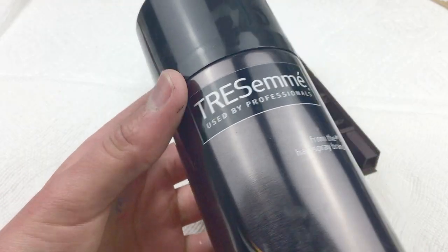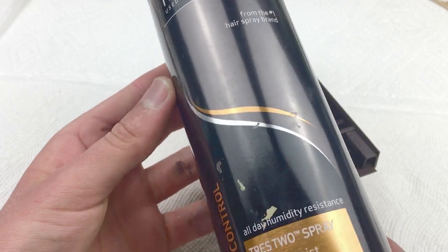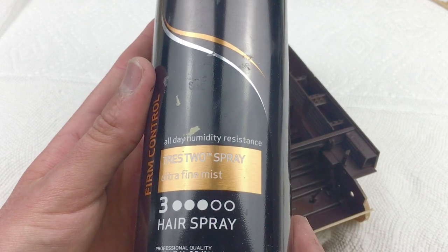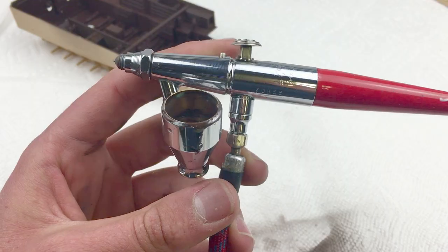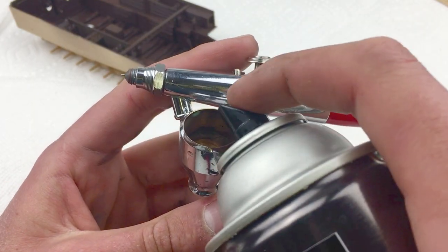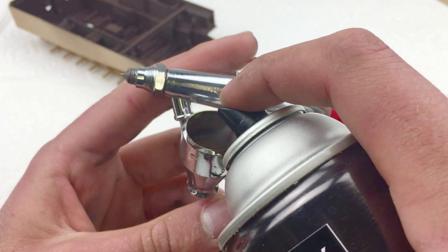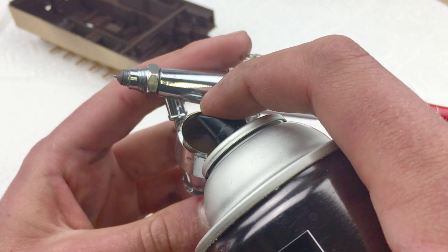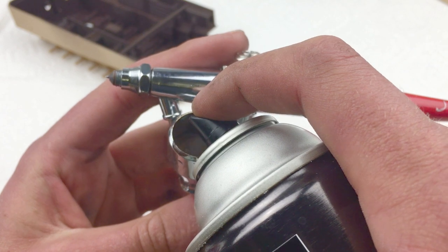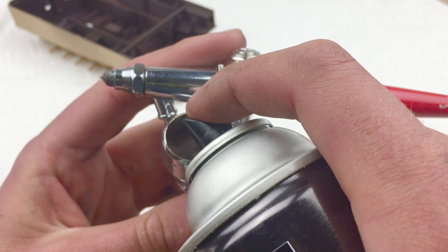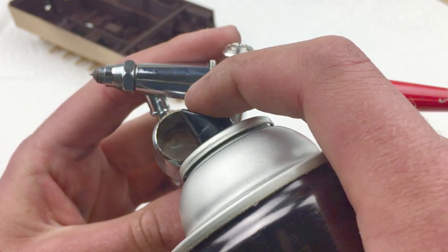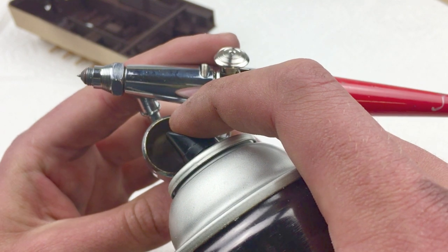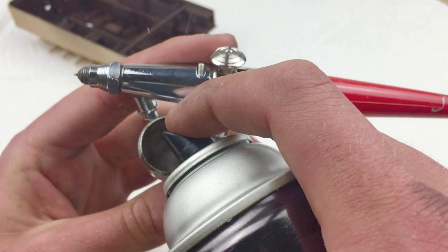Next I'm going to use this Tresemme hairspray. There's nothing special about it. I bought it at my local grocery store. For me, I like to decant it into my airbrush cup because it gives extra control. Some people like to spray it on their models straight from the can. I have tried it that way, but I find it makes too thick of a coat and creates overly large, out of scale chips.